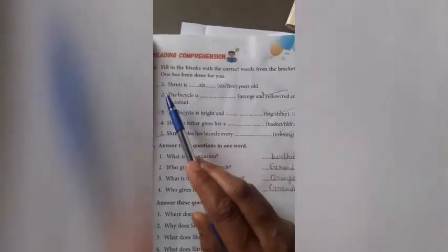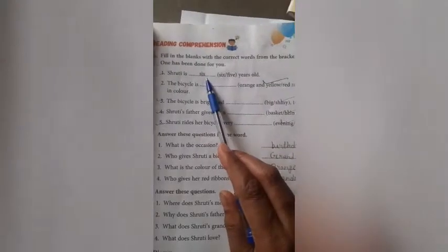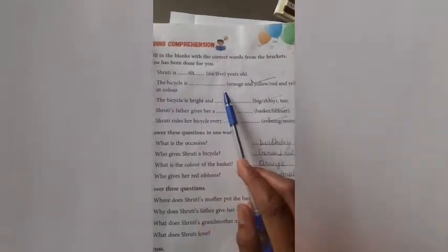Now I am going to explain filling the blanks with correct words from the bracket. First one is Shruti is dash years old. Shruti is now 6 years old. The bicycle is dash in color.